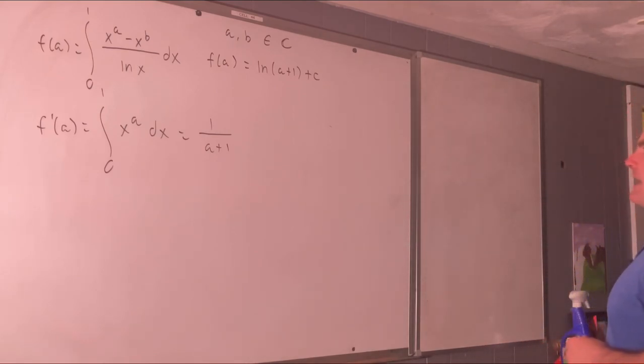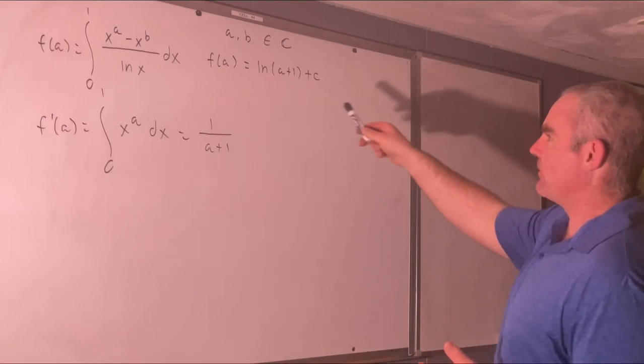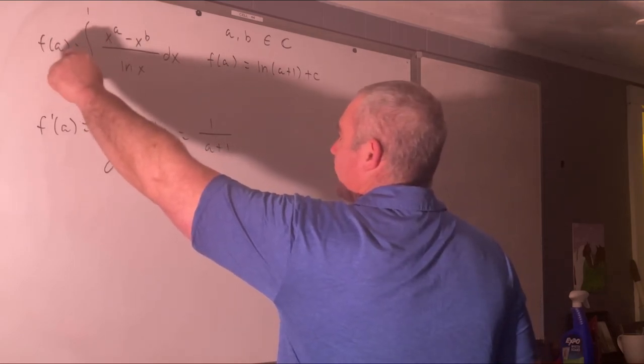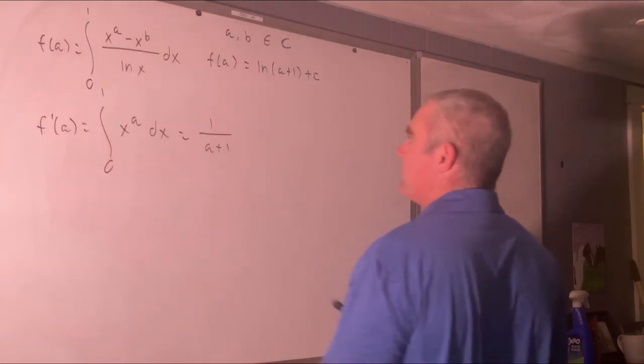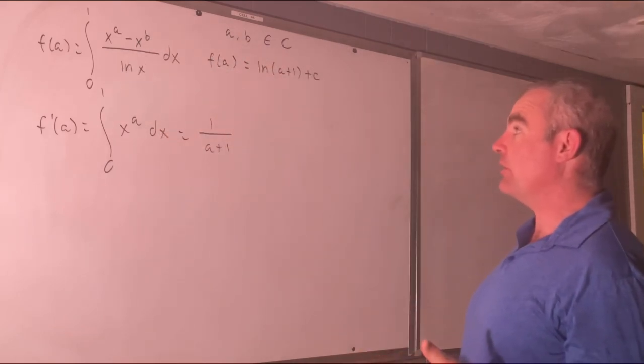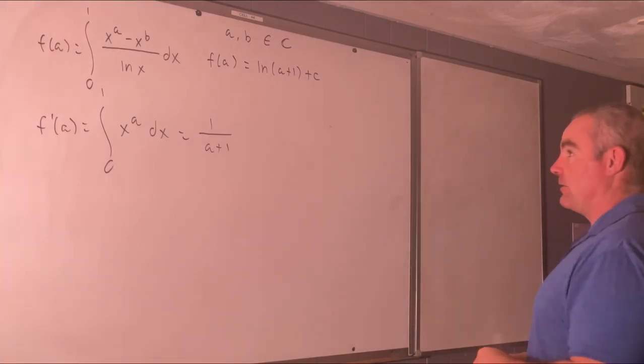Alright, well how are we going to get rid of that plus c? Let's plug in a value for f of a that we can obviously know, that we will know the answer to that integral. We'll know what the answer is. If we plug in a is equal to b that thing goes to 0. In other words, f of b is equal to 0.